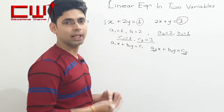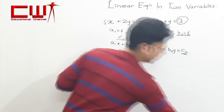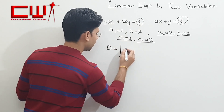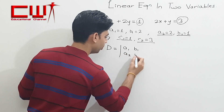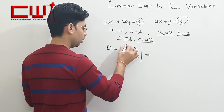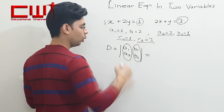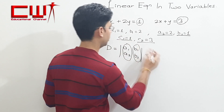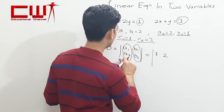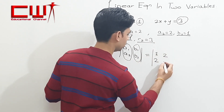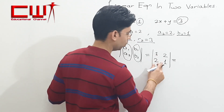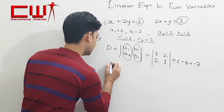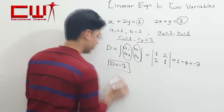अब हम determinant D निकालेंगे। Determinant D कैसे निकलता है? a1 b1 / a2 b2 — जहाँ a1, a2 x के coefficients हैं और b1, b2 y के coefficients हैं। Values place करते हैं: 1 2 / 2 1. Determinant solve करेंगे: 1×1 = 1, minus 2×2 = 4, तो D = 1 − 4 = −3.